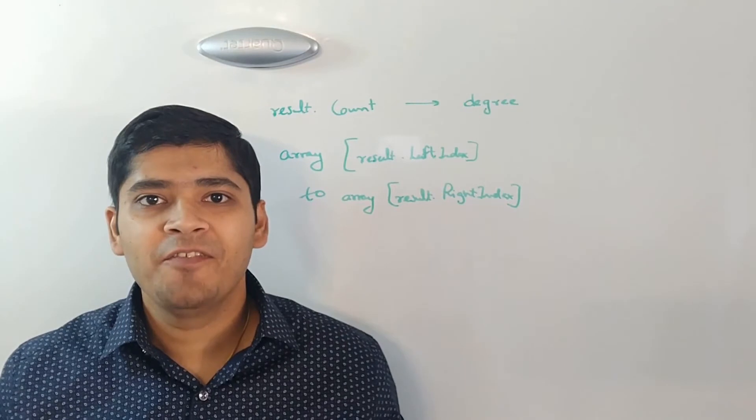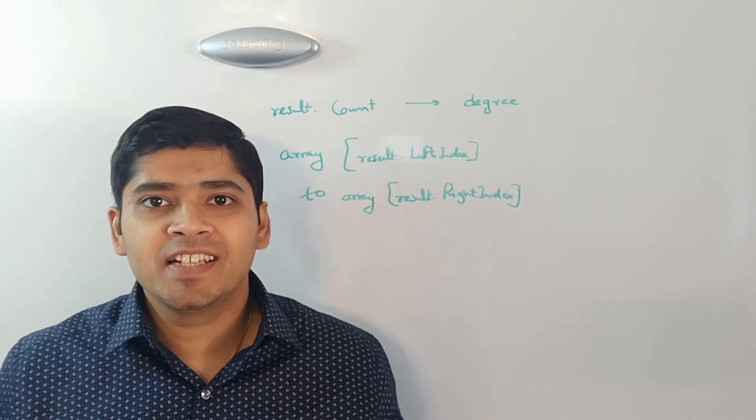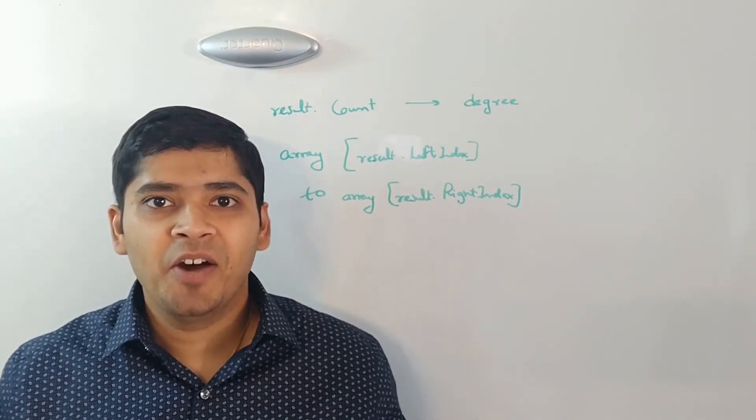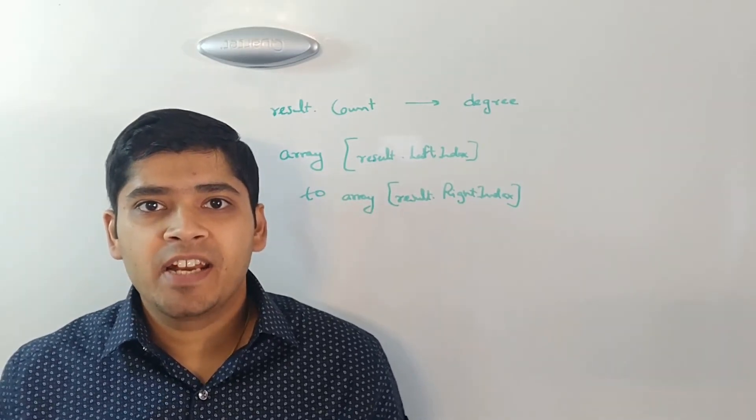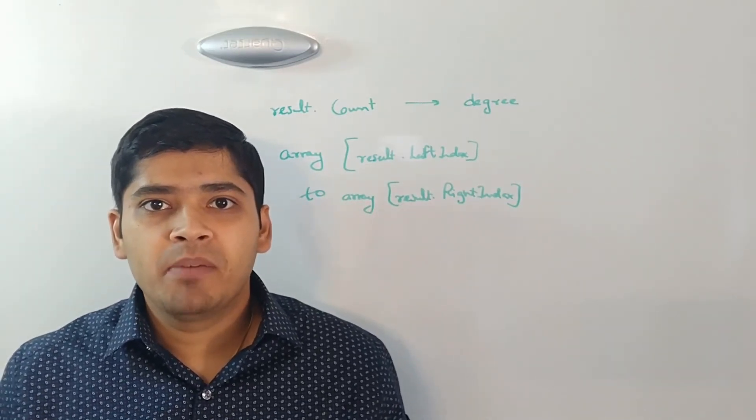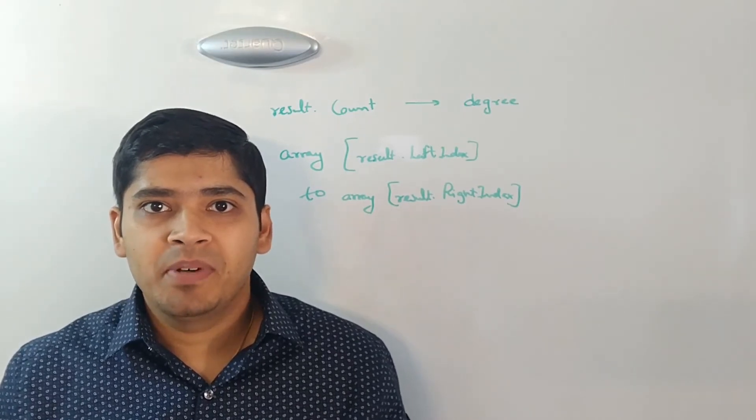So finally, we have the result. The result contains three things. The count which represents the degree of the array and the left index and right index which represent the boundary of the minimum subarray.